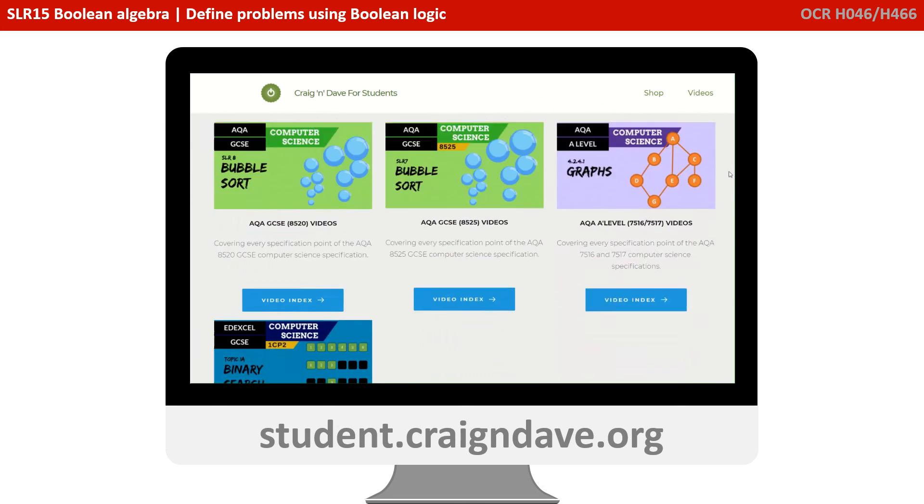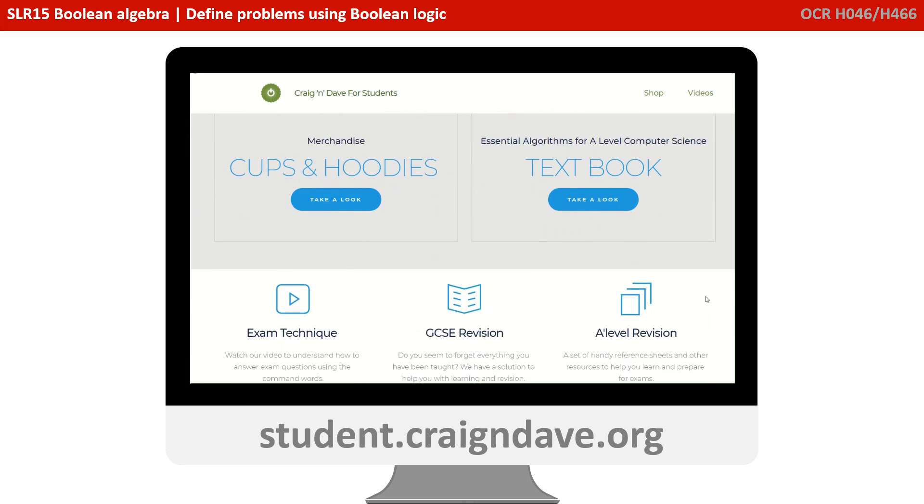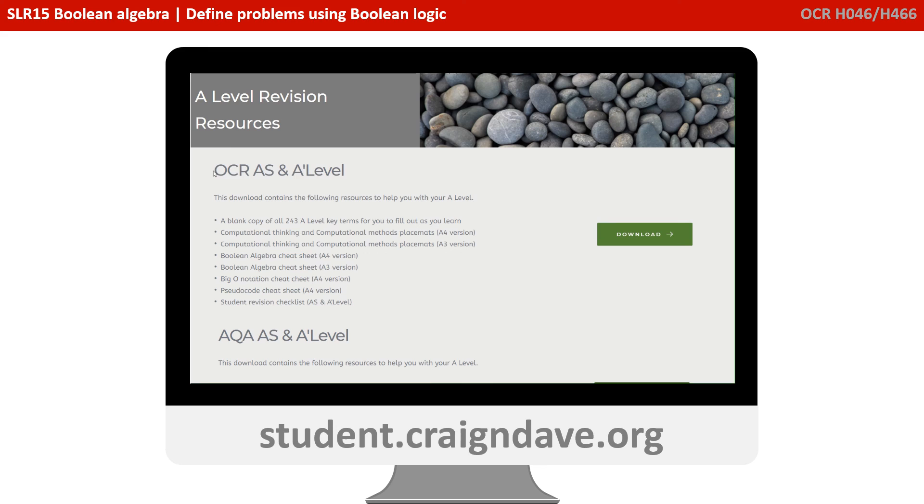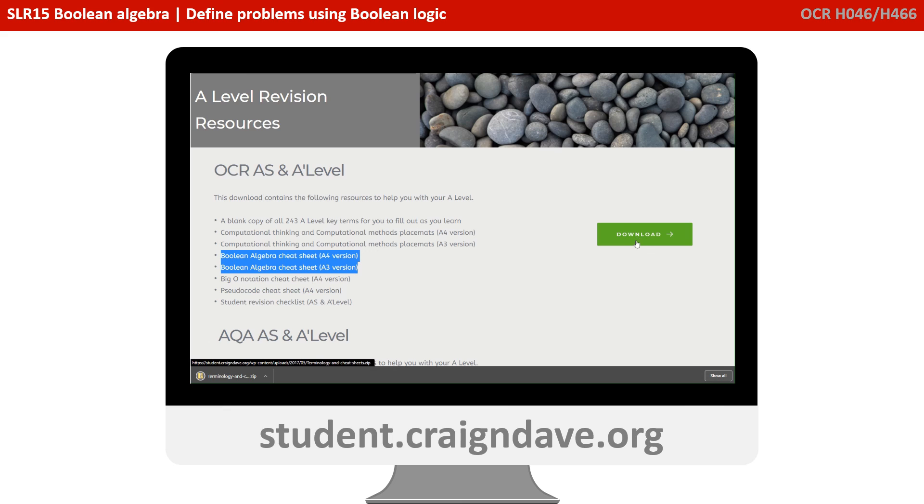You can find this over at student.craiganddave.org, just scroll down to where it says A-level revision. If you select that, you will see OCR A-level revision, including a whole bunch of free resources, including these cheat sheets. You can click download, no subscription or logins required, and you'll get access to this cheat sheet.